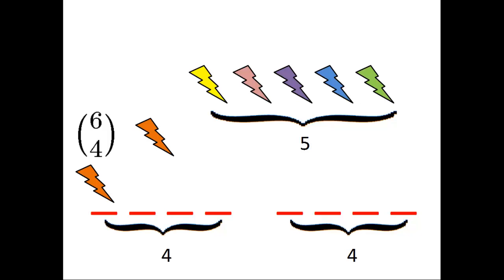If we include the object, then we must choose three additional objects from the five remaining objects. This equals five choose three. If we exclude the object, then we must choose all four objects from the remaining five objects, which is five choose four.